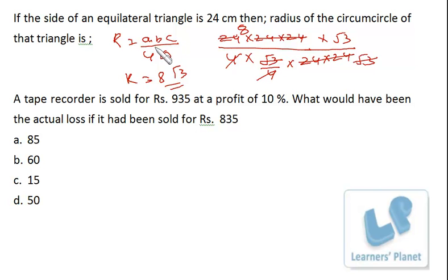So if you know this relation, very easy to solve. A tape recorder is sold for rupees 935 at a profit of 10%. What would have been the actual loss if it had been sold for rupees 835? Pretty simple.